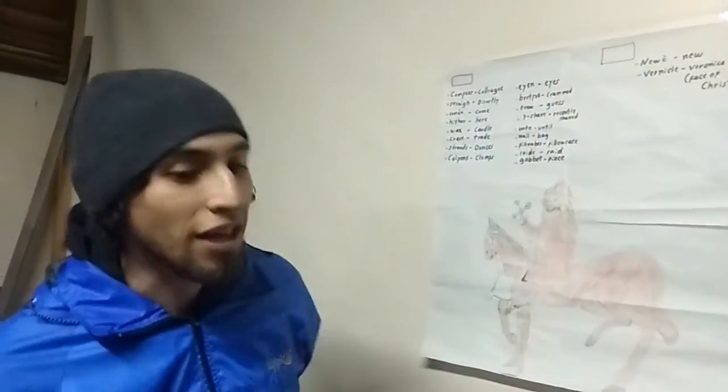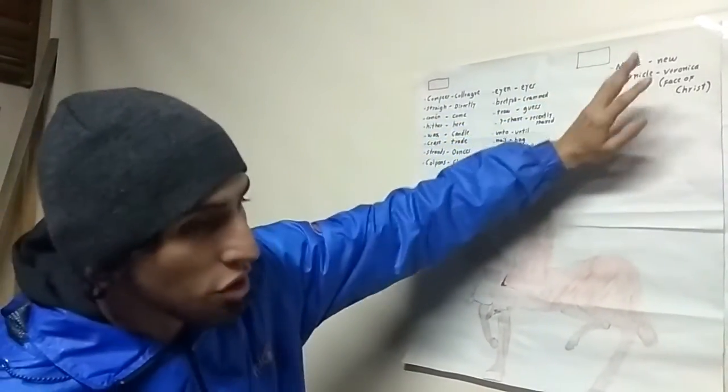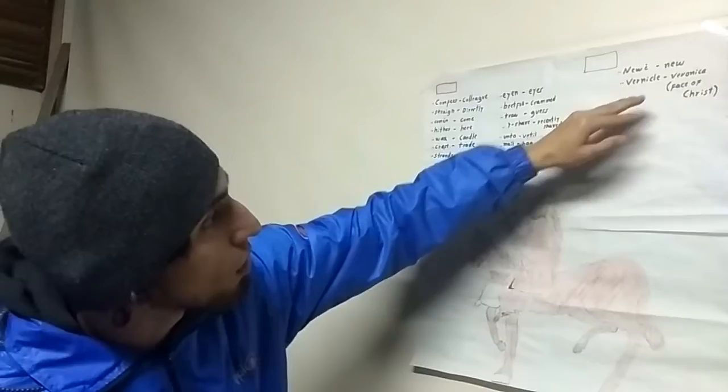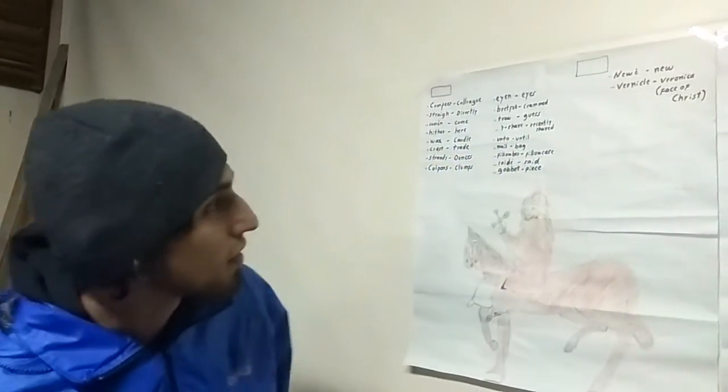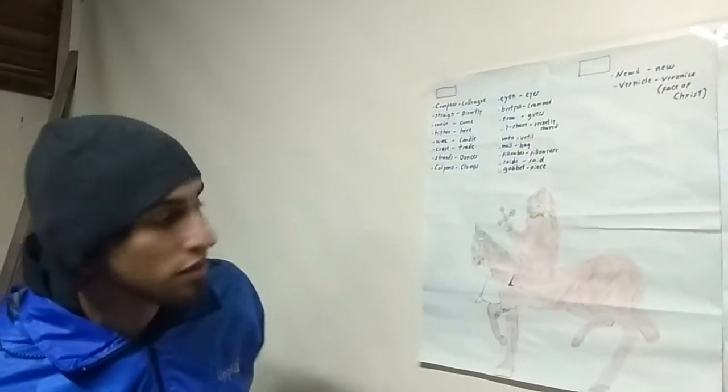or the archaic words. Nui that is new, vernickel that means veronica, and we can find here the meaning that is the face of Christ.